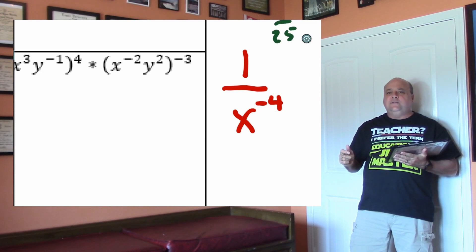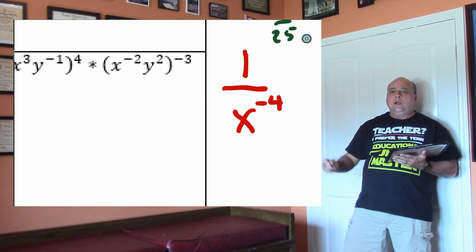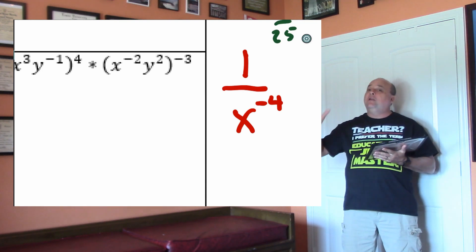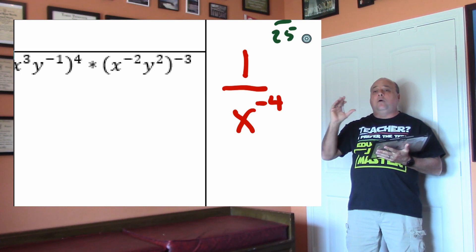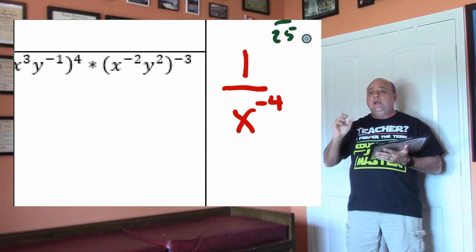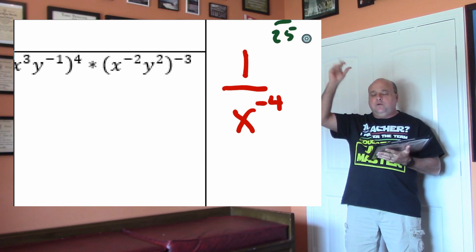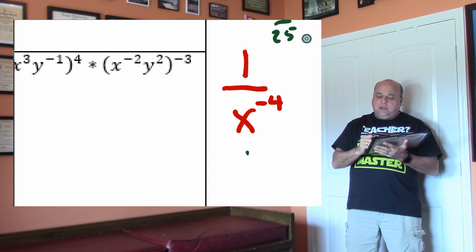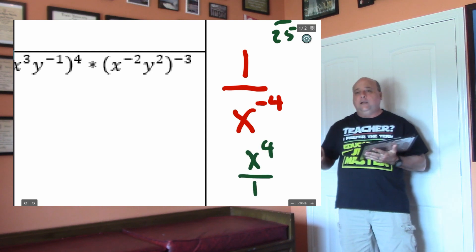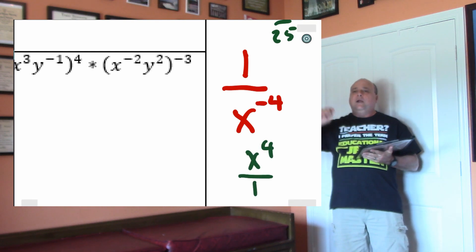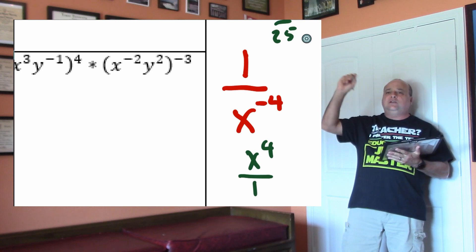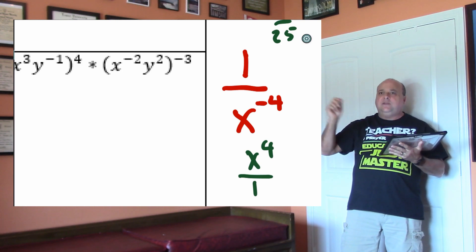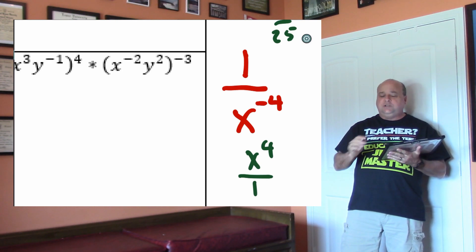Let's go to 1 over x to the negative 4. The x has a negative exponent, which means the base is in the wrong part of the fraction. If I were to take the x and move it to the top, this would turn into x to the fourth over 1. Whenever you take a base and move it across the fraction bar, the sign of the exponent switches.